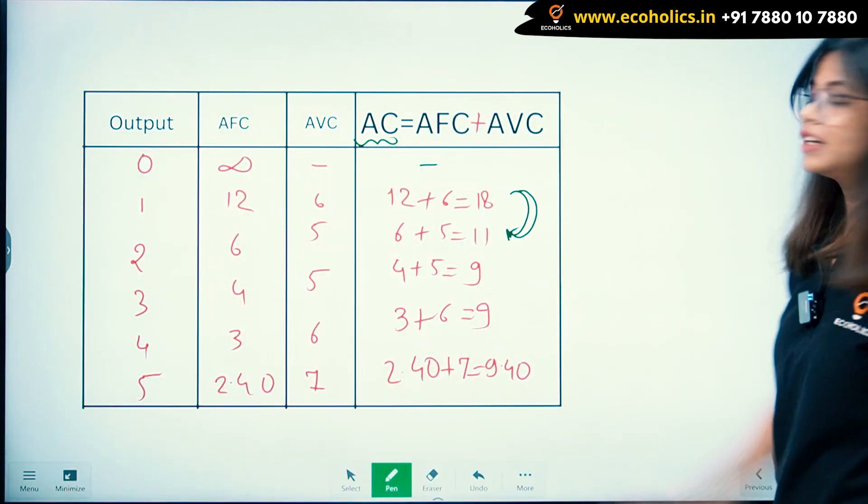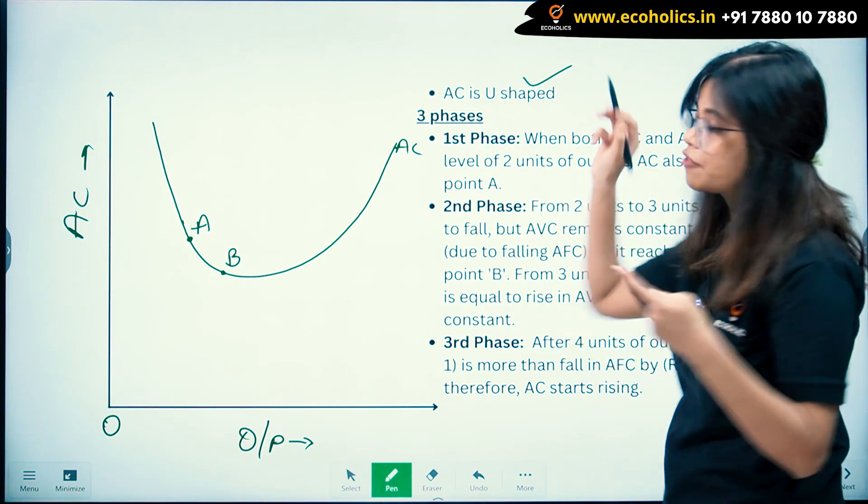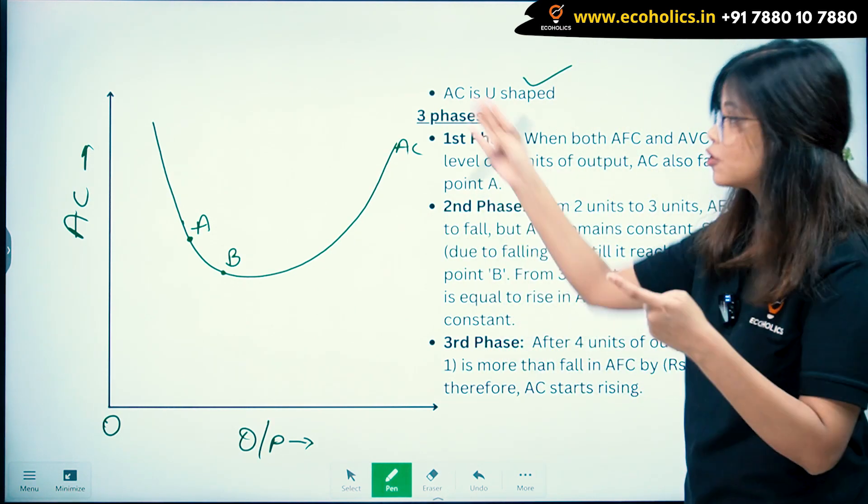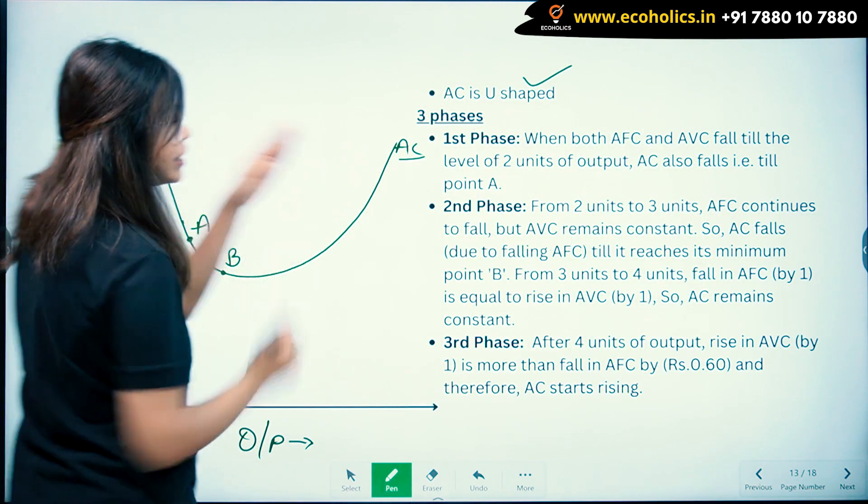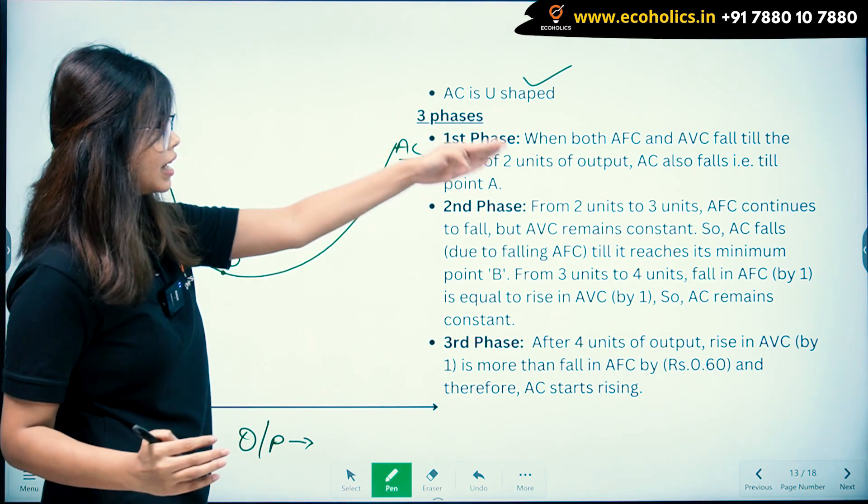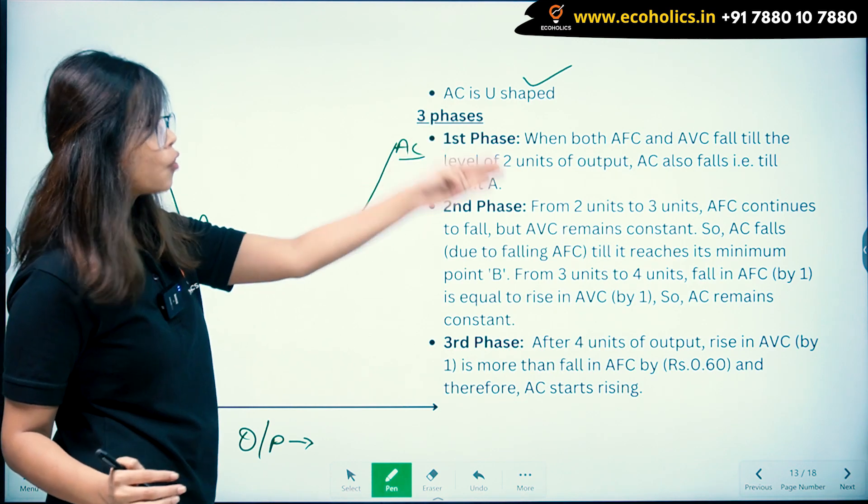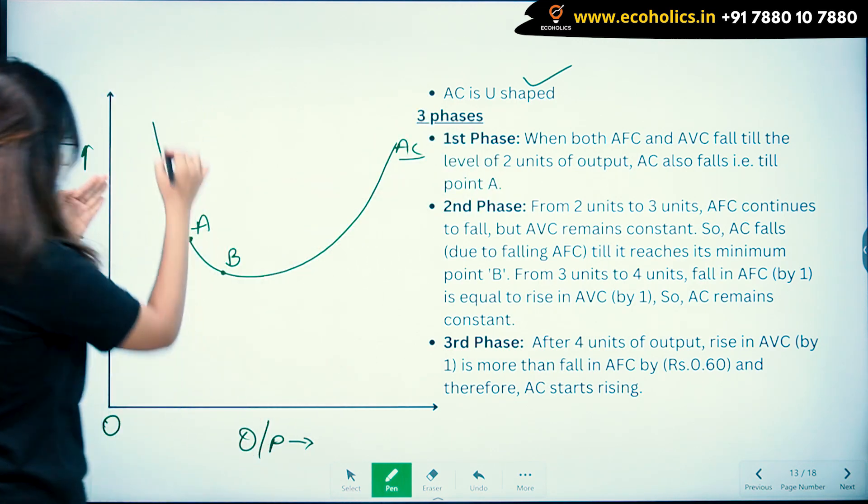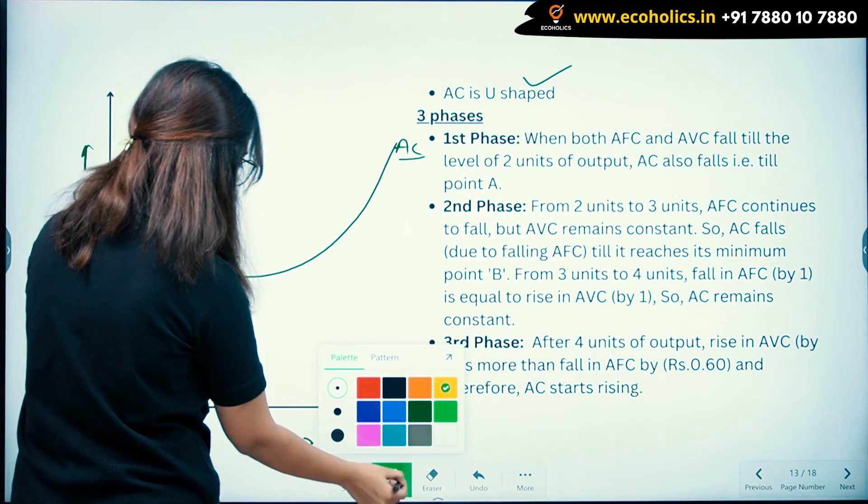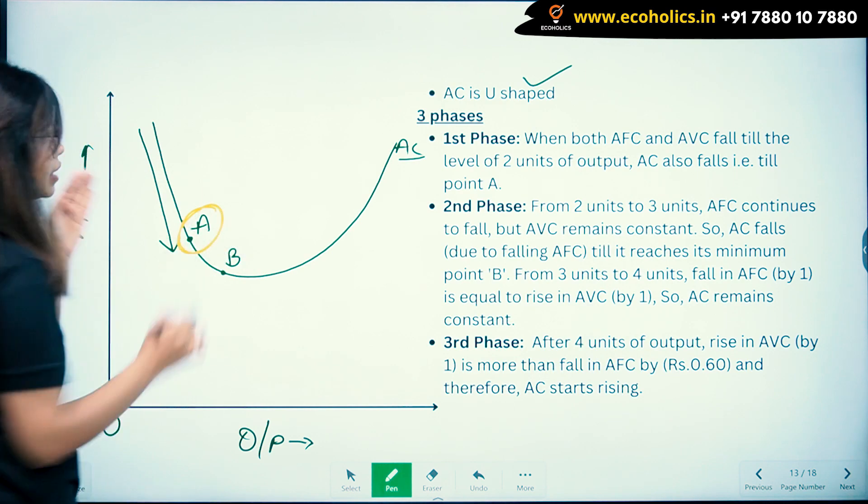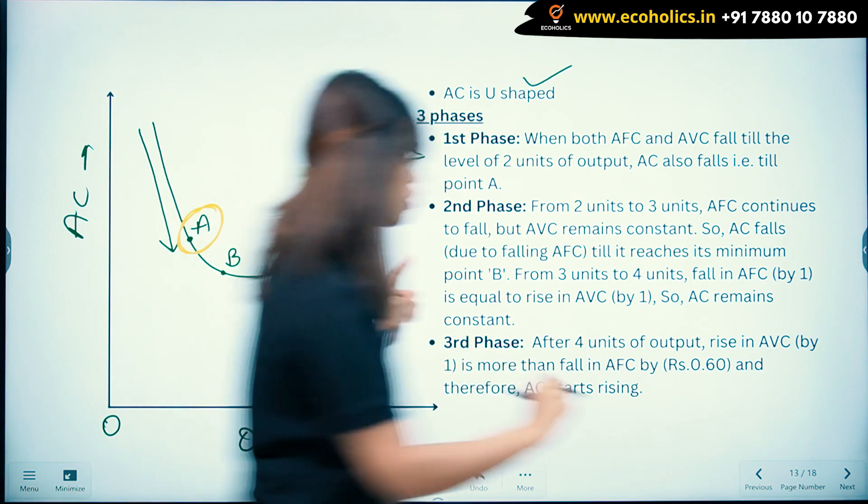Now let's draw the curve of AC. AC is U-shaped - I have already drawn it. Your AC curve is U-shaped and it has three phases. When both AFC and AVC fall till two units of output, AC curve also falls till point A.